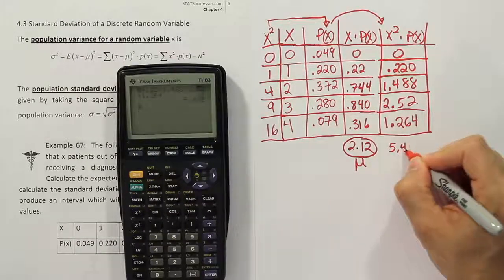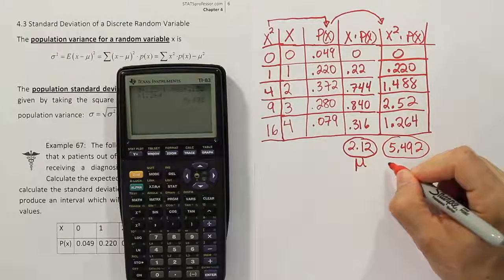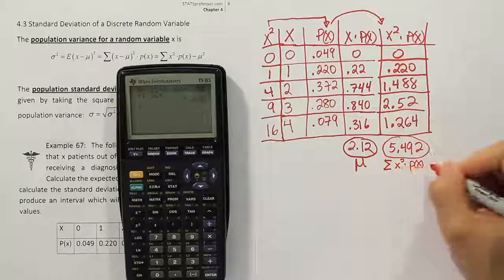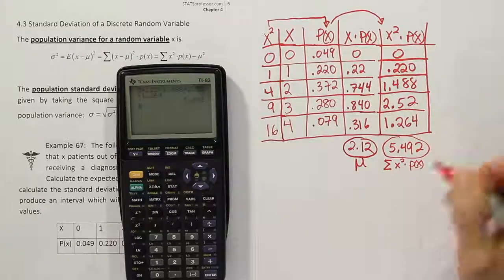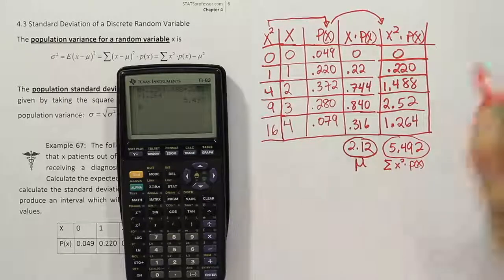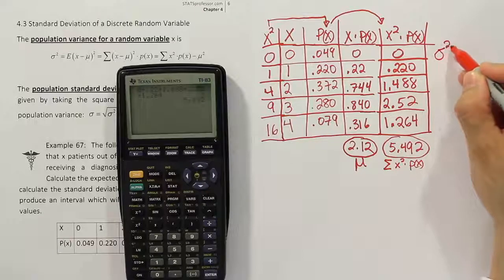5.492. So 5.492 is the sum. And remember what this is. This is the sum of X squared times P of X. That is not our variance. To get our variance, we're actually going to have to plug it into the formula here.